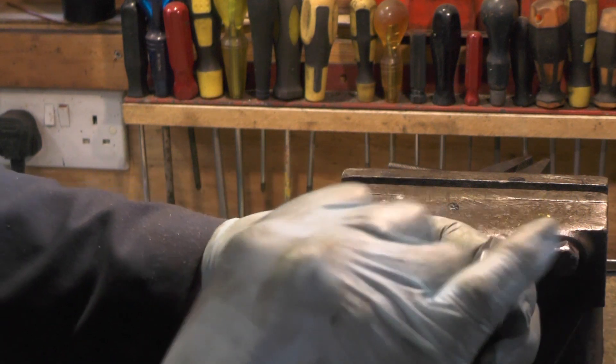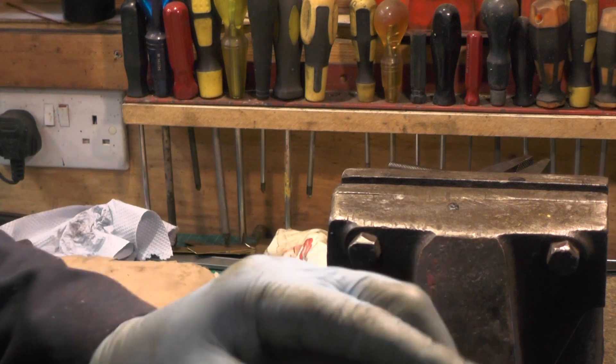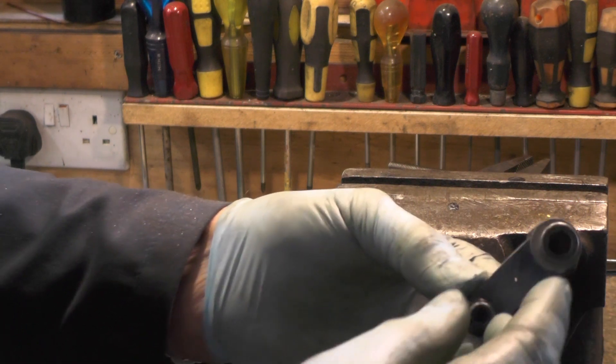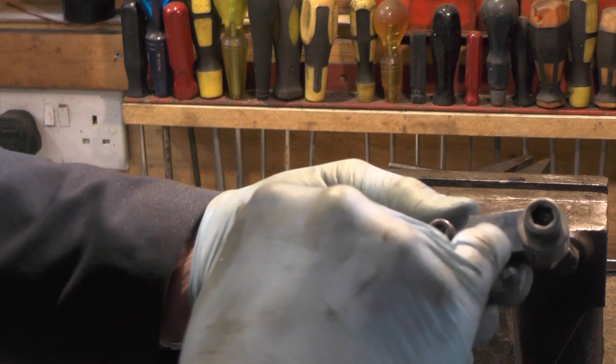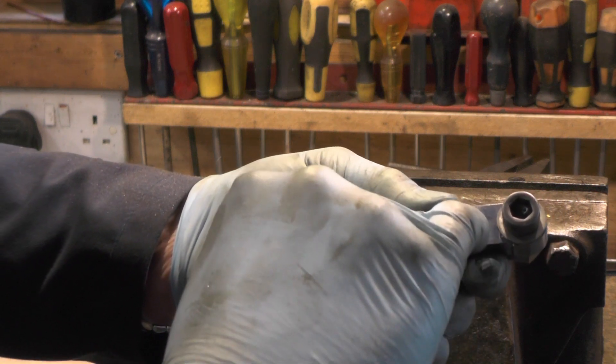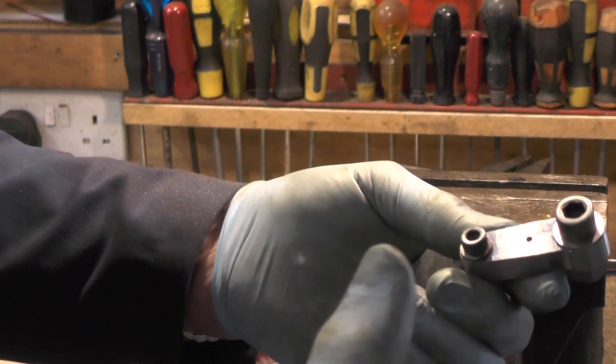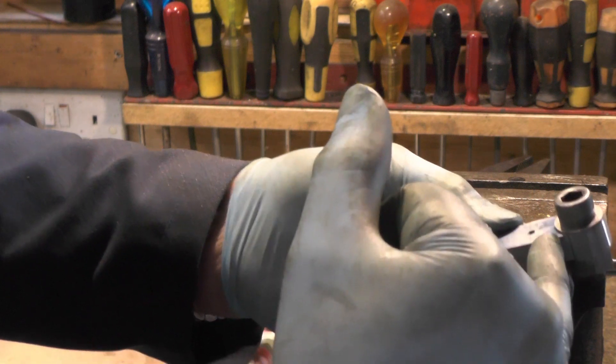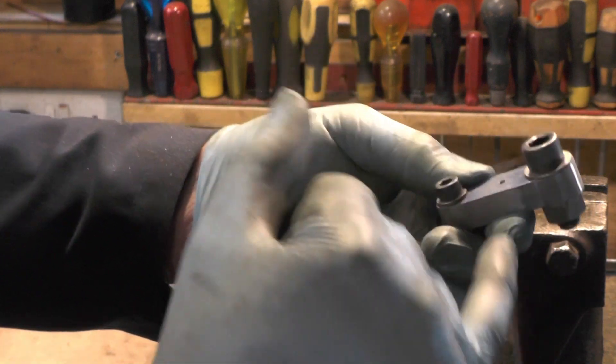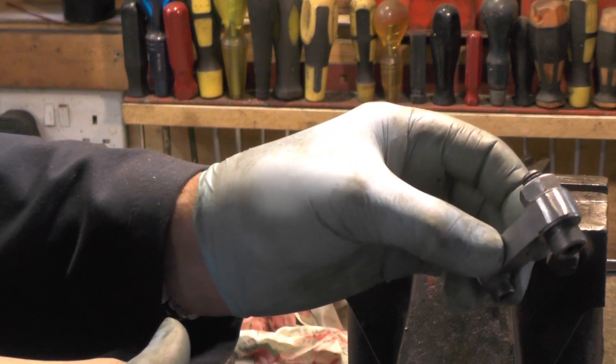So now I've got the radiuses filed on, I've just got to put the slot in from the small hole to the large hole for the clamping bolt that's going to come in this way on both of them. There's two together there.